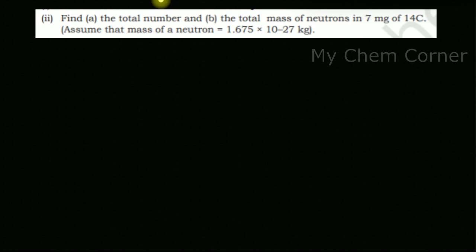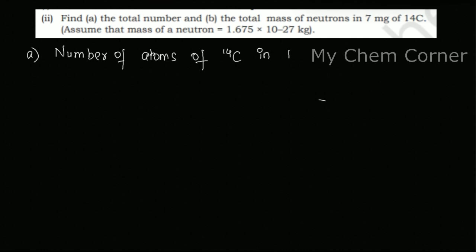Here we are given an isotope of carbon with 14 as the atomic mass. We need to find the total number and total mass of neutrons. First, let's find the number of atoms of Carbon-14 in one mole. In one mole of Carbon-14, the number of atoms is Avogadro's number.